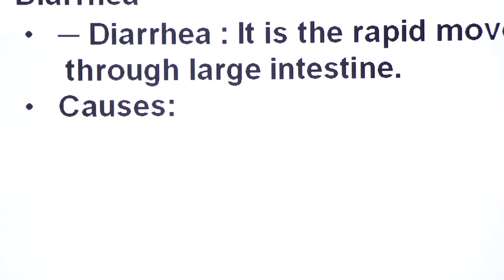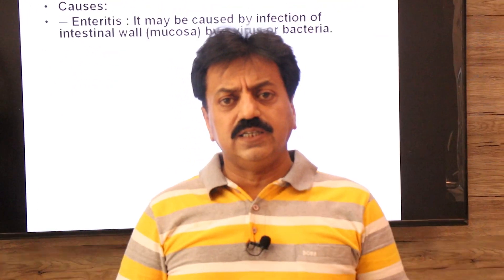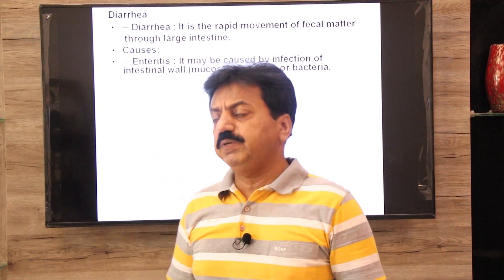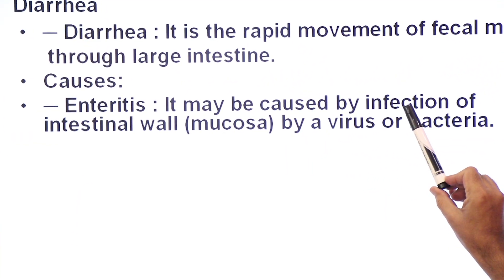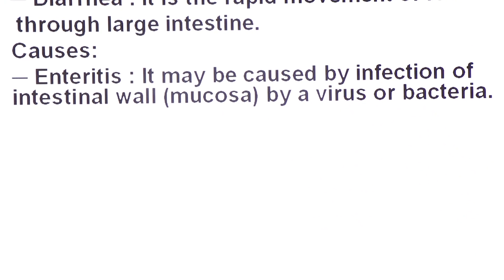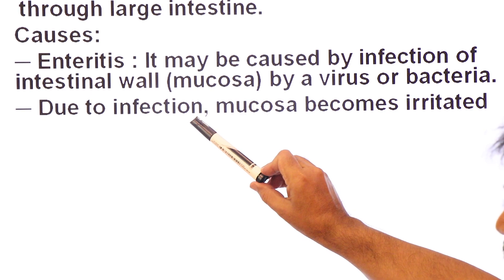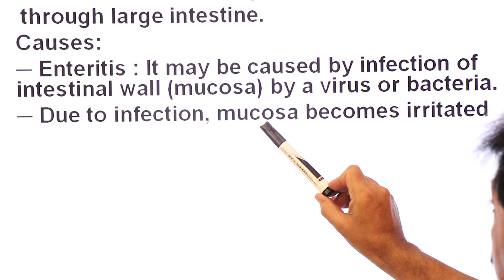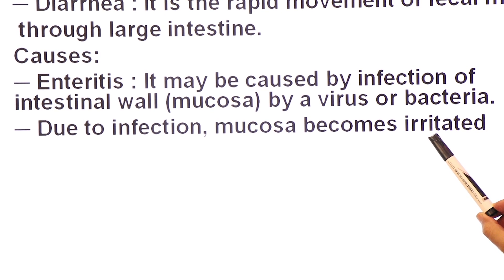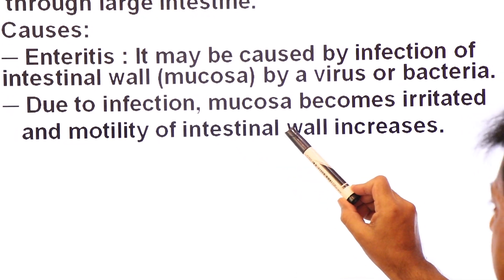What are the causes of diarrhea? The first cause is enteritis — enteritis is inflammation of the intestine. This inflammation can be caused by bacteria or viruses. It may be caused by infection of the intestinal wall mucosa layer by a virus or by bacteria. Due to this infection, the mucosa becomes irritated and the motility and peristalsis of the intestinal wall increases.